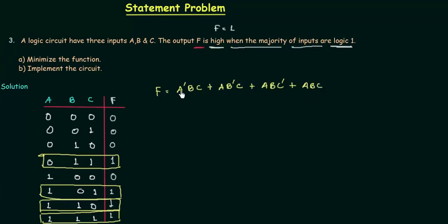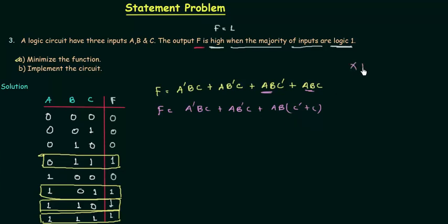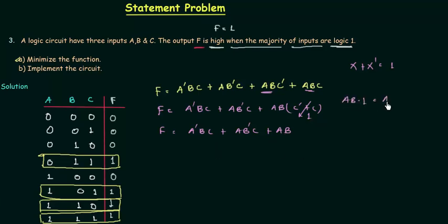So we have the function, but we want to minimize it using Boolean algebra. We take f = a'bc + ab'c + abc' + abc. We factor ab from the last two terms, placing c' and c inside a bracket. Since x OR x' = 1, c' OR c equals 1, so ab(c' + c) simplifies to ab. The function becomes f = a'bc + ab'c + ab.